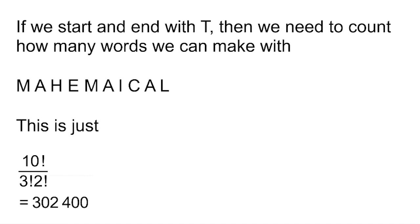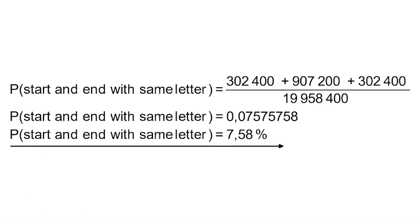So the probability that a randomly chosen word from those letters of MATHEMATICAL starts and ends with the same letter is just those three cases added together divided by the sample space. It comes to about 7.58%.